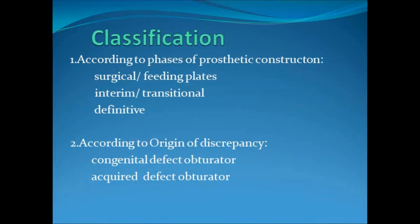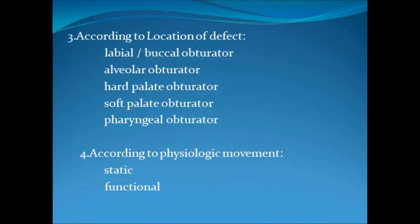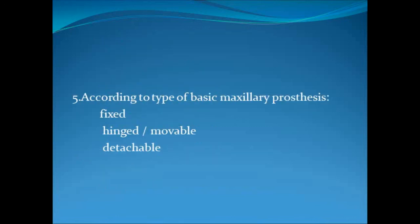Now let us see the classification of obturator prostheses — there are five classifications. First, according to phases of prosthetic construction: surgical or feeding plates, interim or transitional, and definitive. Second, according to origin of discrepancy: congenital defect obturator or acquired defect obturator. Third, according to location of the defect: labial or buccal, alveolar, hard palate, soft palate, and pharyngeal obturator. Fourth, according to physiologic movement: static or functional. Fifth, according to type of basic maxillary prosthesis: fixed, hinged or movable, or detachable. The first classification — according to phases of prosthetic construction — will be discussed in detail in our next session.